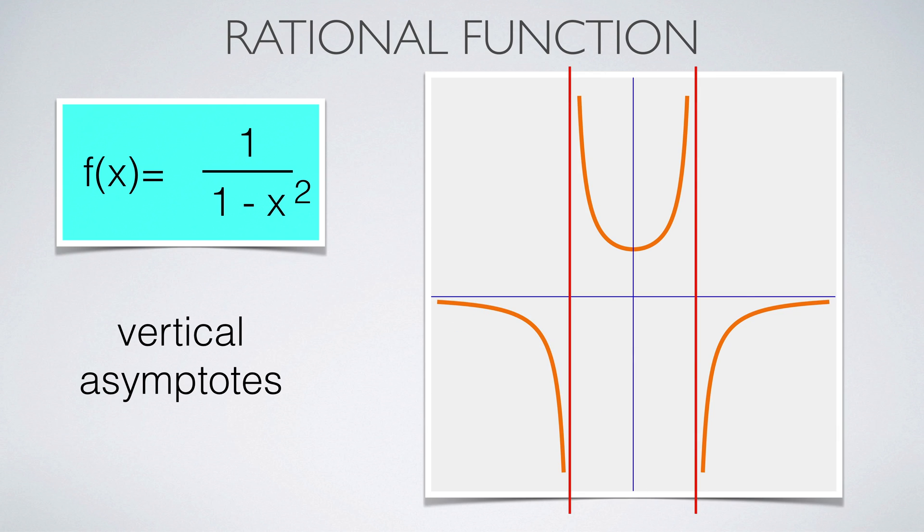The Agnesi function from the previous slide was already an example of a rational function, a quotient of two polynomials. Here we see another example of a rational function. But this function has poles at x equals 1 and x equals -1, points where the function is not continuous because the denominator is 0 there. The function has vertical asymptotes there.